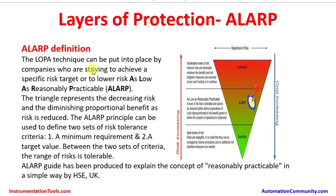The LOPA technique can be applied by companies striving to achieve a specific target factor or to lower risk — as low as reasonably practicable. The triangle here represents decreasing risk and the diminishing proportional benefit as risk is reduced. The ALARP principle can be used to define two sets of risk tolerance criteria: a minimum requirement and a target value.